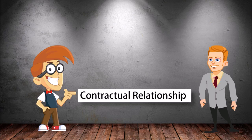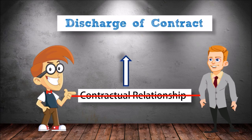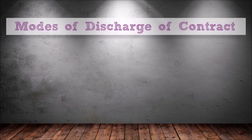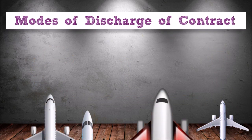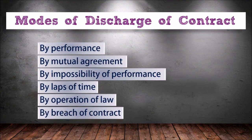When this contractual relationship gets cancelled or terminated, this is called discharge of contract. A contract can be discharged by performance, by mutual agreement, by impossibility of performance, by lapse of time, by operation of law, or by breach of contract.